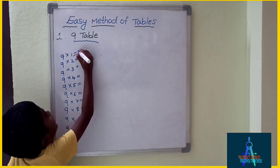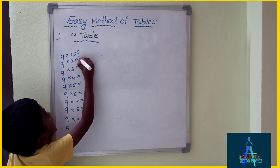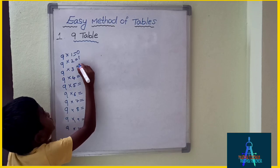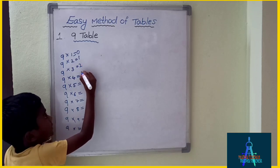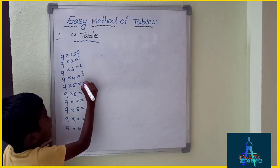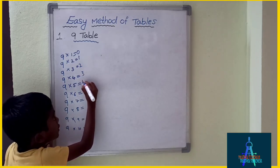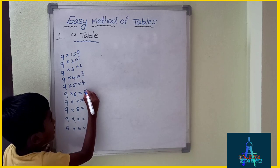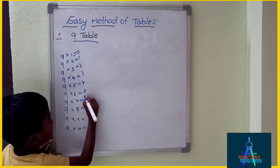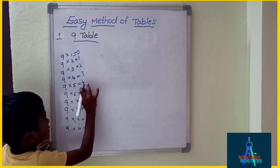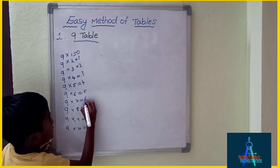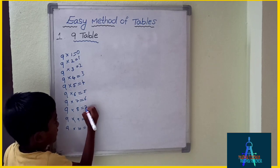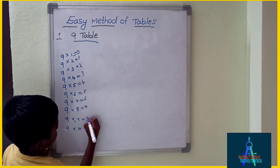And write 0, 1, 2, 3, 4, 5, 6, 7, 8 on the left side, going downward.